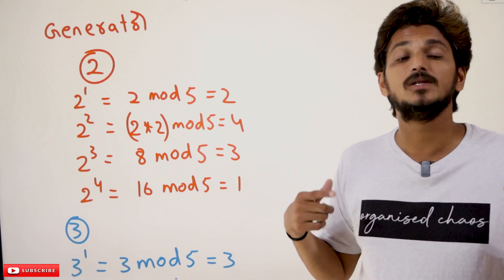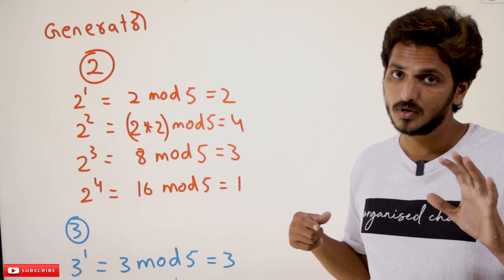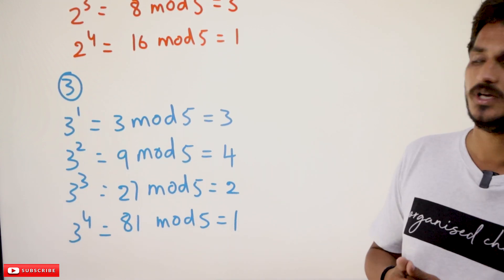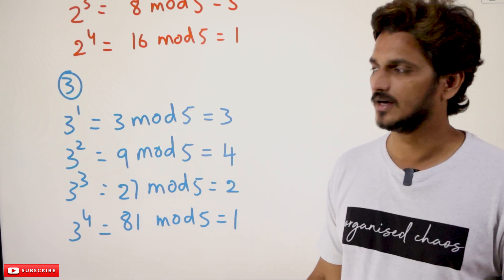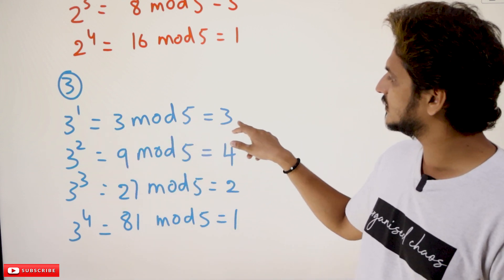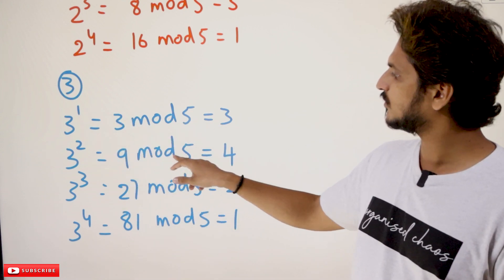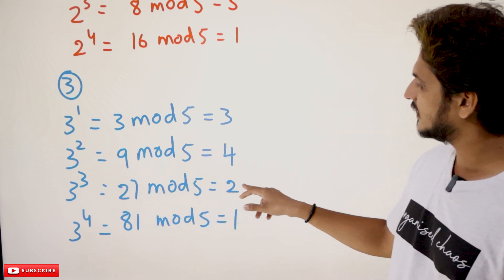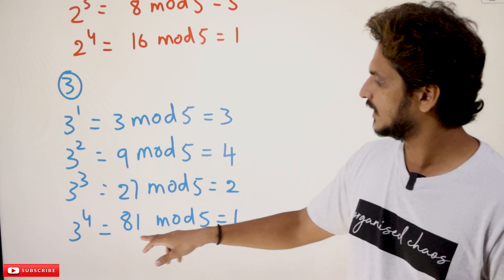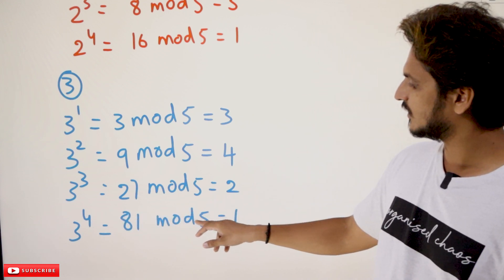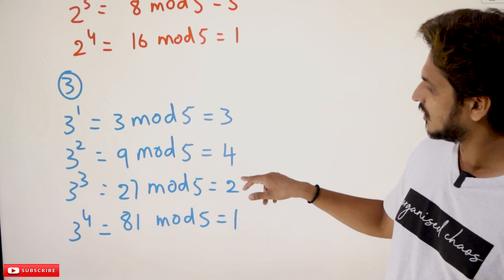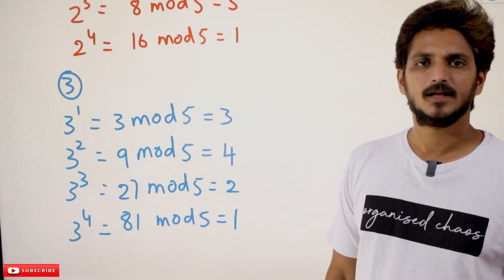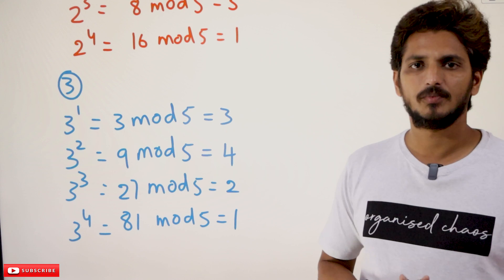We can have multiple generators — no need to have only one generator. We have one more generator here: 3 is also a generator. 3^1 mod 5 = 3; 3^2 = 9 mod 5 = 4; 3^3 = 27 mod 5 = 2; 3^4 = 81 mod 5 = 1. We generated all the elements: 1, 2, 3, 4. So we can call this a cyclic group.